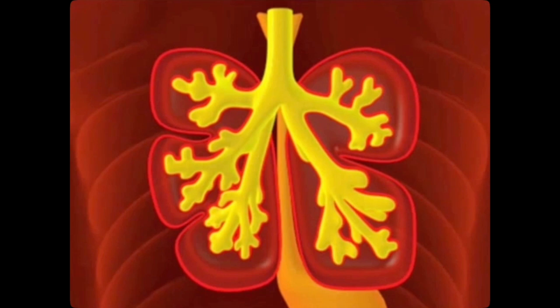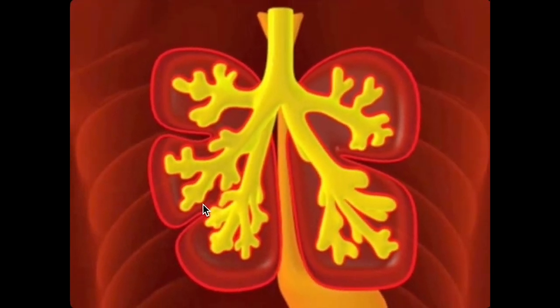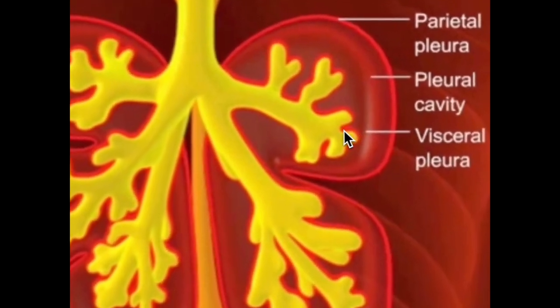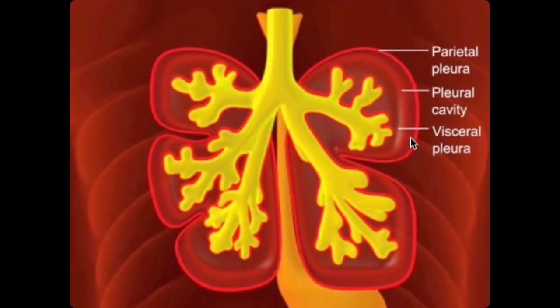Throughout all of this, the developing respiratory bud remains covered by splanchnic mesoderm. This is very important: the splanchnic mesoderm forms not just the cartilage, muscle, blood vessels, and connective tissue of the respiratory tract, but also the visceral pleura that lines the surface of the lung.